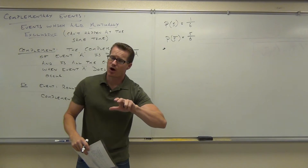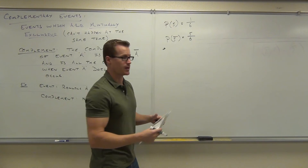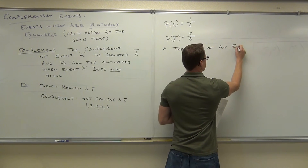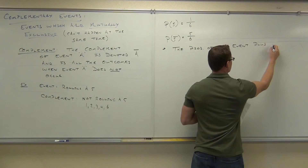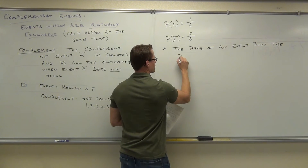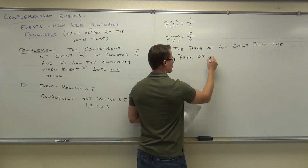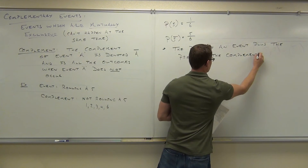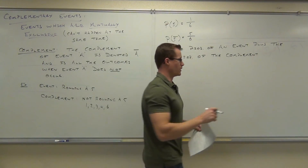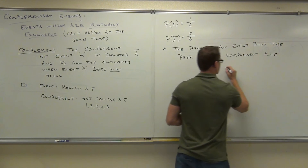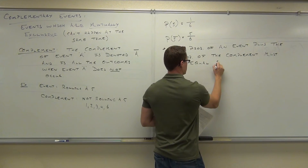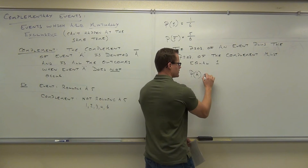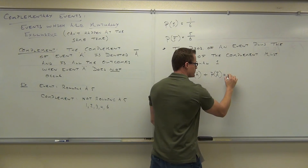The probability of an event plus the probability of the complement of that event has to equal one all the time. In more basic terminology: if you have the probability of some event plus the probability of its complement, you get one.